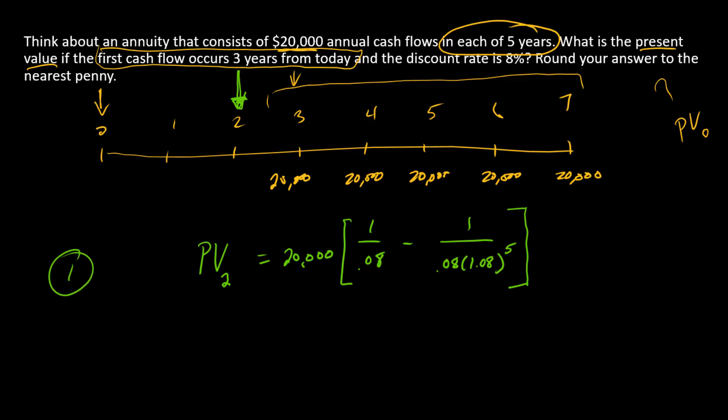We go ahead and do those calculations. We can see that the present value as of time two is $79,854, and I'll show several digits here just so we can eliminate problems with rounding.